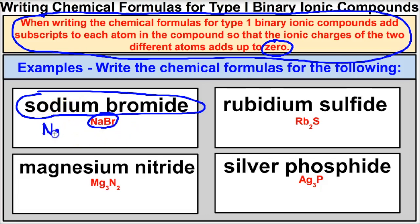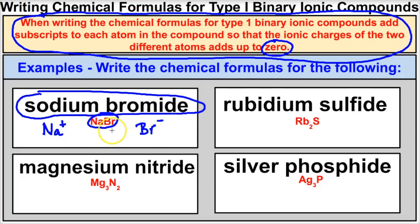For example, sodium comes from group 1 on our periodic table, so it has a positive 1 charge. Bromine, or bromide, comes from group 17 and has a negative 1 charge. We have a positive 1 charge and a negative 1 charge — these two charges add up to zero. Plus 1 and minus 1 add up to zero, so we don't need to add any subscripts, and our chemical formula for sodium bromide is just NaBr.